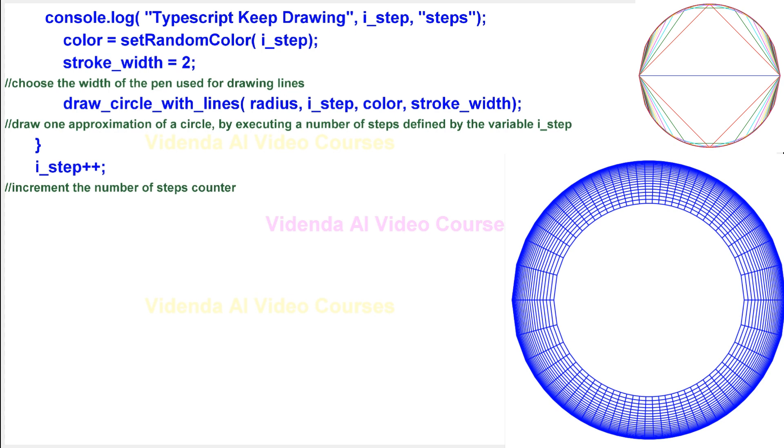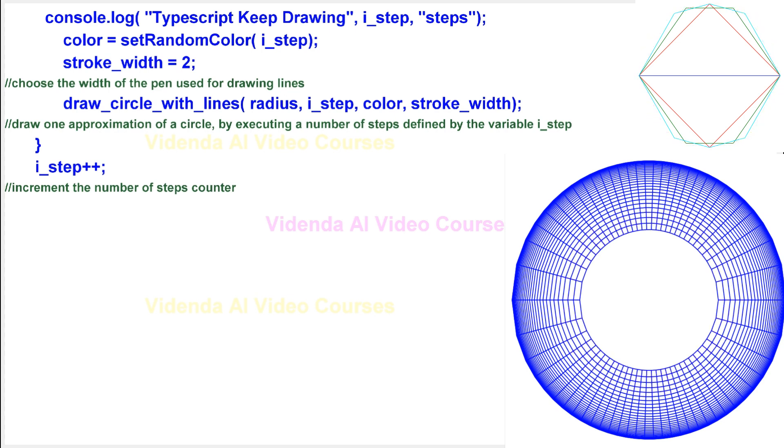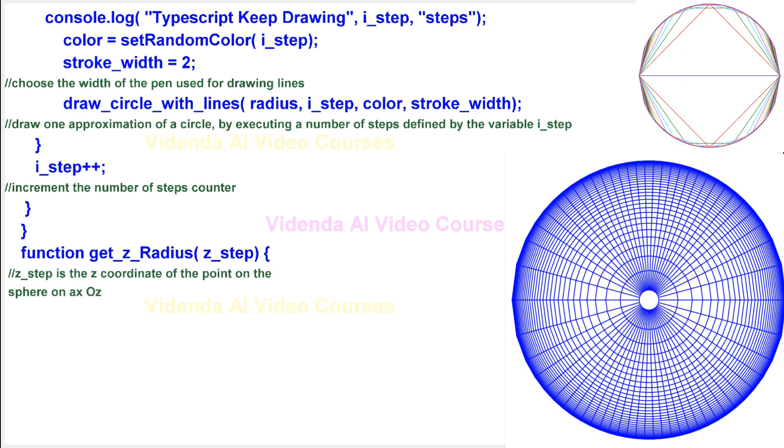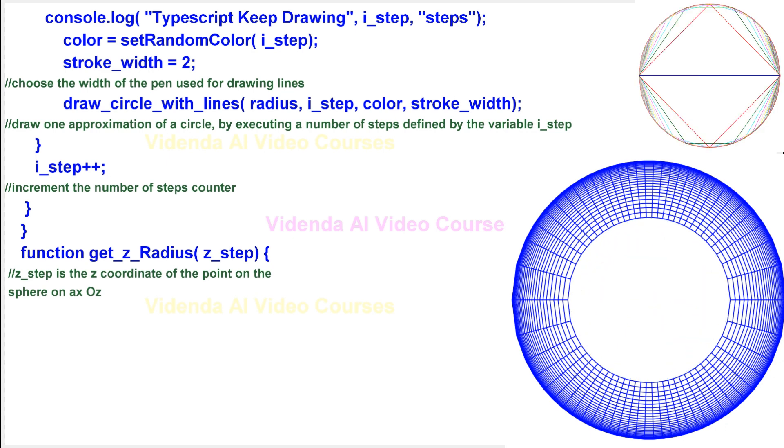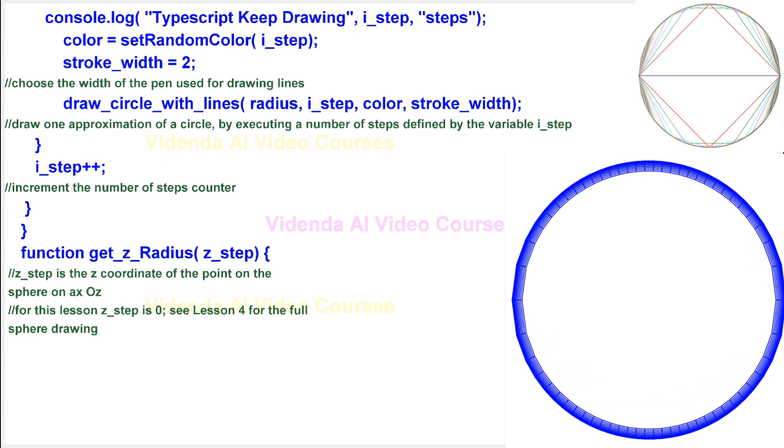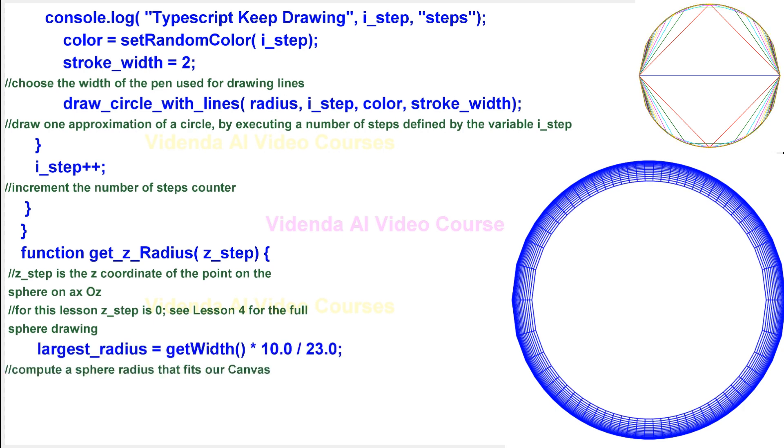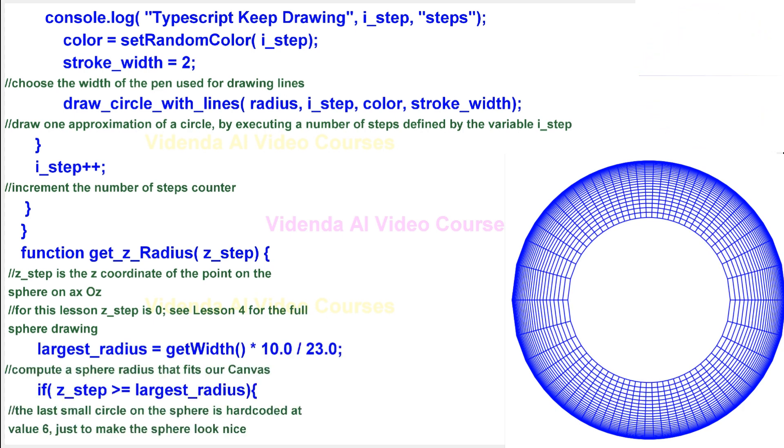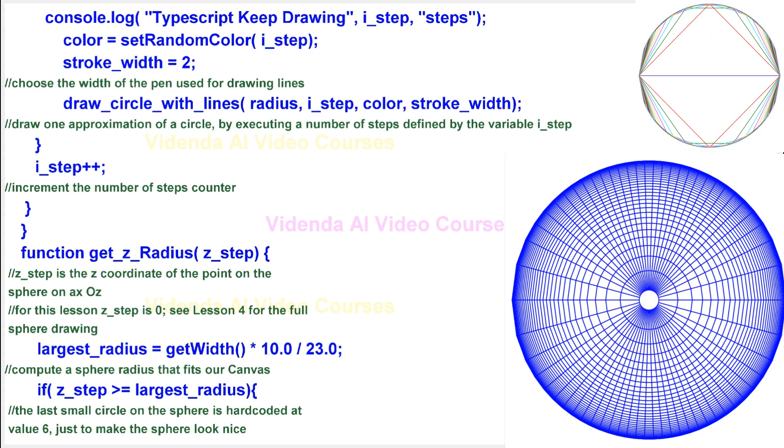Increment the number of steps counter. Z underscore step is the z coordinate of the point on the sphere on oz axis. For this lesson z underscore step is 0. See lesson 4 for the full sphere drawing. Compute a sphere radius that fits our canvas. The last small circle on the sphere is hard-coded at value 6, just to make the sphere look nice.